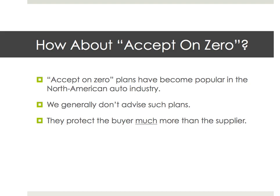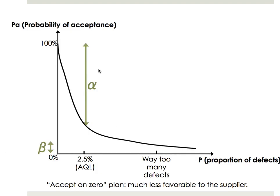Some buyers have attempted to get tougher with an acceptance-zero standard, meaning that if you find just one defect, that's enough — reject. It's very tough and getting some traction in some industries, and it's already popular in the car industry in North America. But we don't really advise going for this kind of standard because it's very imbalanced in the buyer's favor — you have a huge alpha risk for the supplier, while the buyer's risk is pretty small. It's pretty hard to find a supplier, say in China, that would accept this.